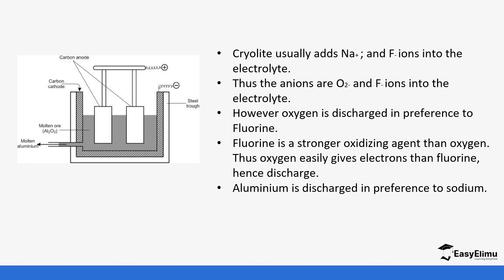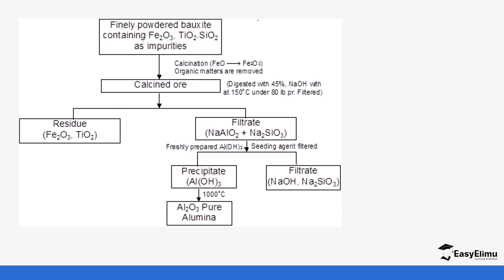To summarise the extraction process: we start with bauxite containing impurities of iron(III) oxide, titanium oxide, and silicon dioxide. Organic matter is removed first. Then the ore is reacted with sodium hydroxide to form sodium aluminate and sodium silicate. Iron(III) oxide and titanium oxide are removed as red mud. The sodium aluminate and sodium silicate are then reacted with carbon dioxide and aluminium hydroxide, which precipitates aluminium hydroxide, leaving the sodium silicate behind. The aluminium hydroxide is then heated to form aluminium oxide — ready for electrolysis.